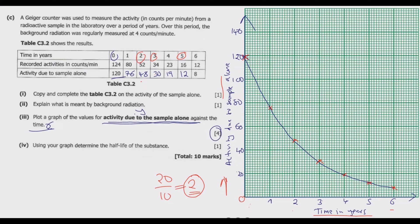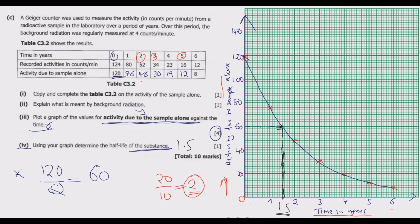Question C part 5: Using your graph, determine the half-life of the substance. The half-life is the time it takes for half of the substance to decay. We started with 120 counts, so we need to find the time for the activity to fall to 60 counts. Move along the graph at 60 on the y-axis, draw a horizontal line to the curve, then drop a vertical line down to the x-axis. You'll find this occurs at 1.5 years. So the half-life is 1.5 years — it takes 1.5 years for half of the 120 counts to decay. Once you do that, you get the full 10 marks.